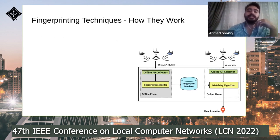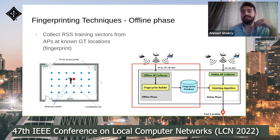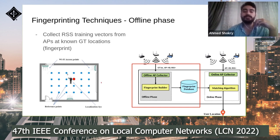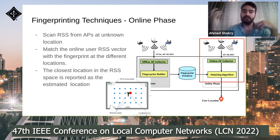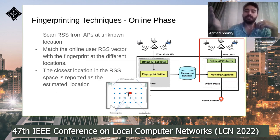Fingerprinting techniques work in two phases. The first is the offline phase, where we collect received signal strength training vectors from different access points at different ground-truth known locations. In the online phase, the user stands at an unknown location, scans the received signal strength from different access points, and we match the online RSS vector with the fingerprint. The closest location in the signal space is reported as the estimated location.